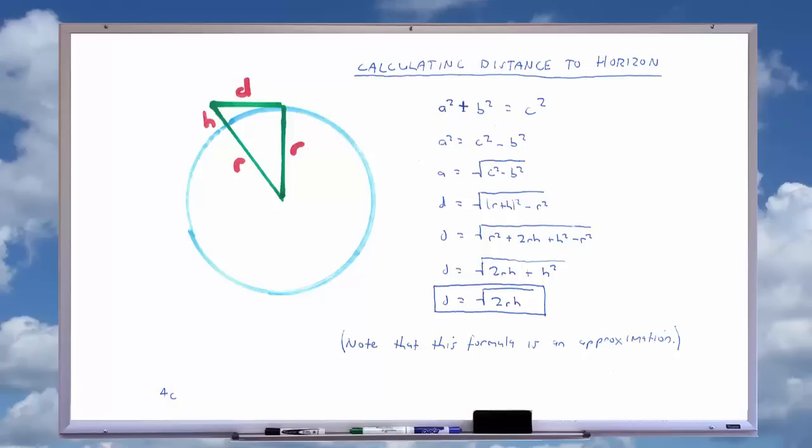When we say that h is insignificant compared to the radius, consider a person standing 1000 feet above surface level. This would equal 0.19 miles, which when squared would equal less than 0.04 miles compared to the radius of 3959 miles. Since most practical applications of this formula will be used much closer to surface level than 1000 feet, you can see why it is acceptable for us to ignore the h^2 component of the equation and simplify to d = sqrt(2rh).